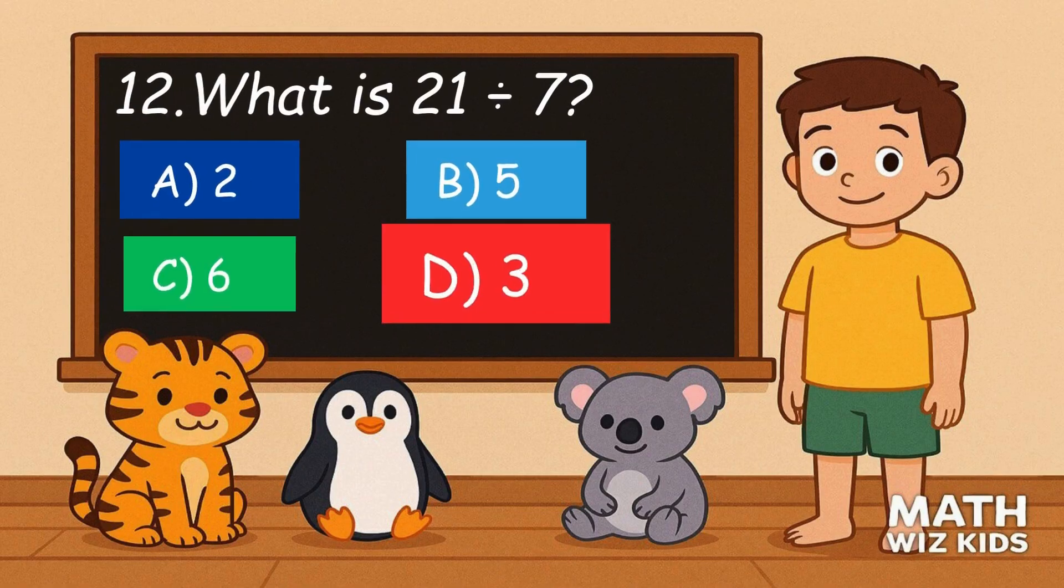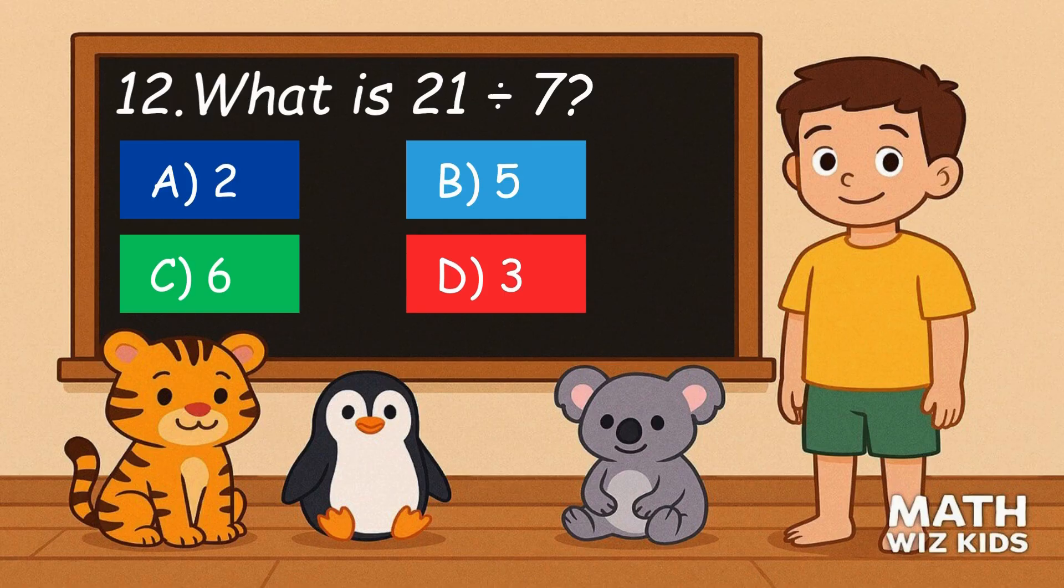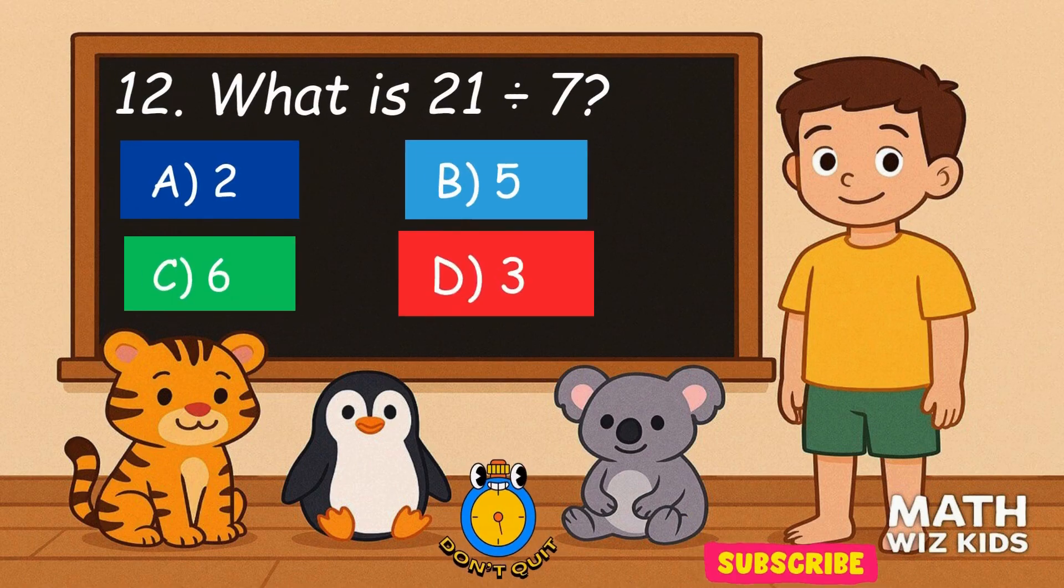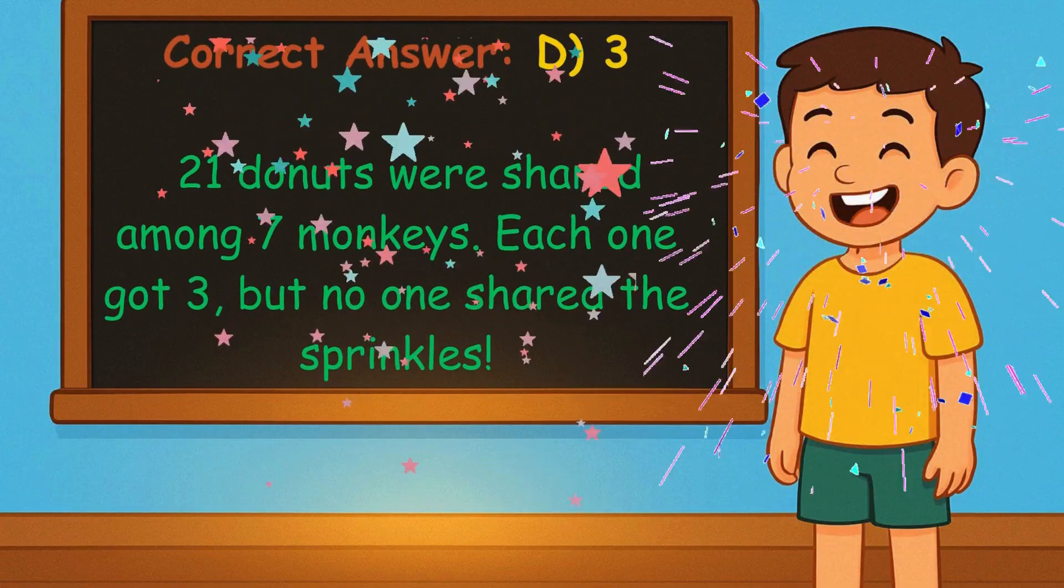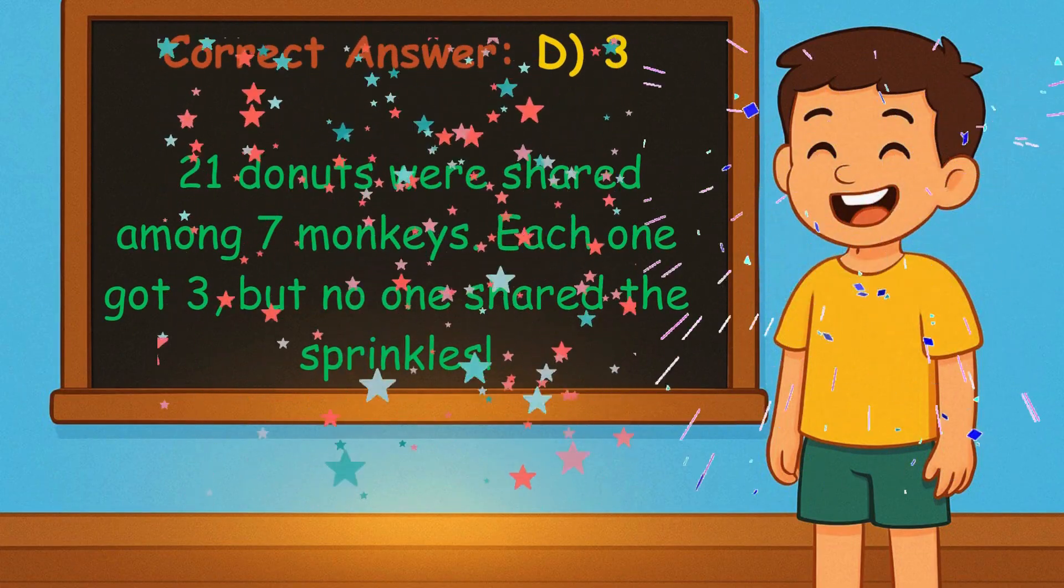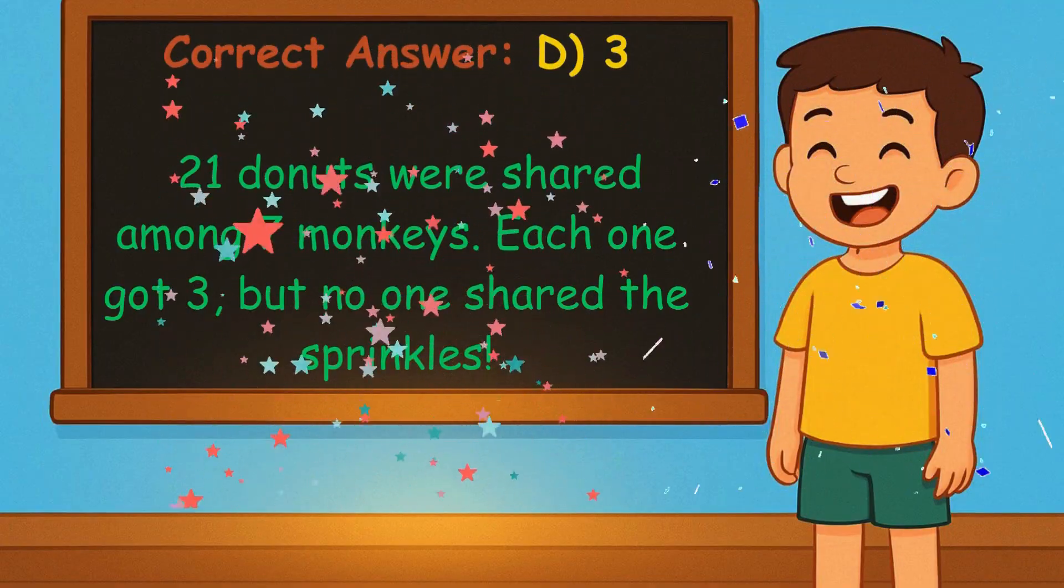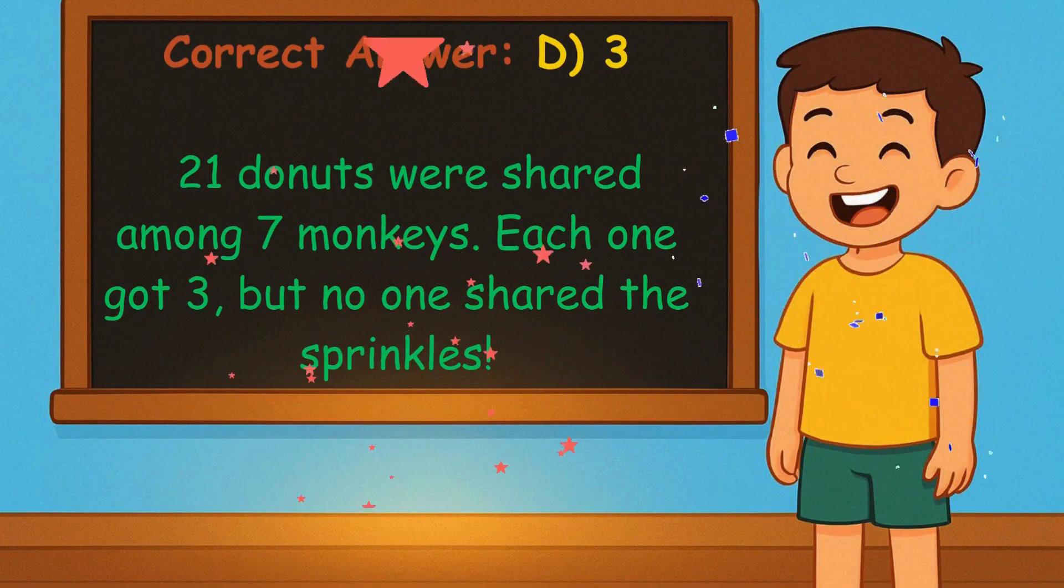12. What is 21 divided by 7? Is it A, 2, B, 5, C, 6, or D, 3? Correct answer is 3. 21 donuts were shared among seven monkeys. Each one got 3, but no one shared the sprinkles.